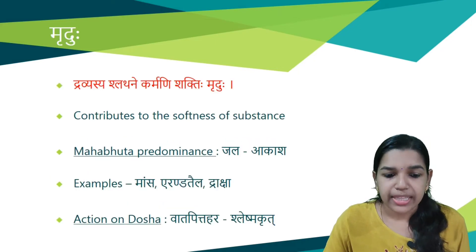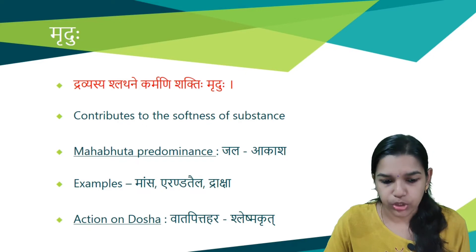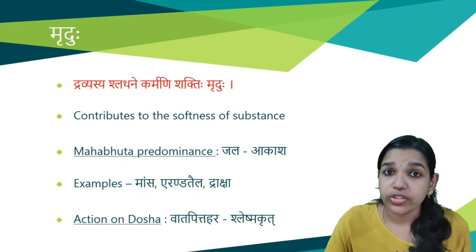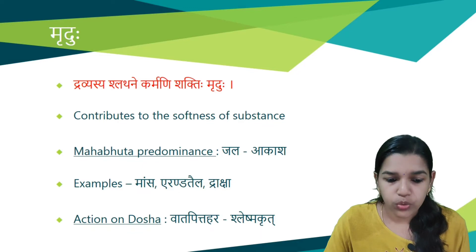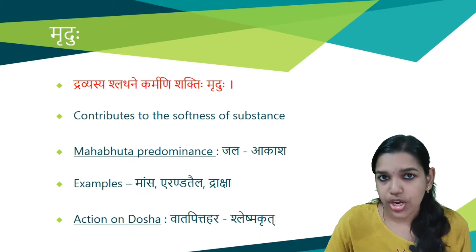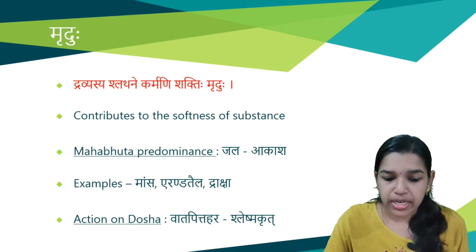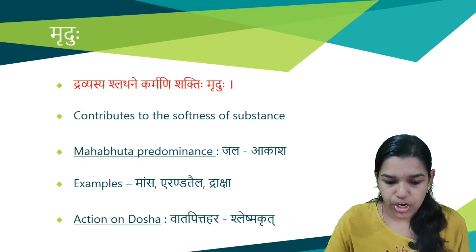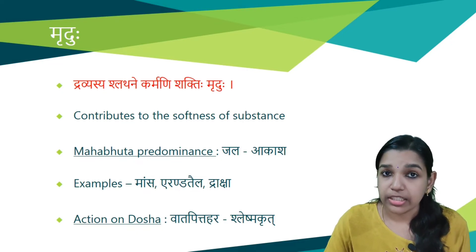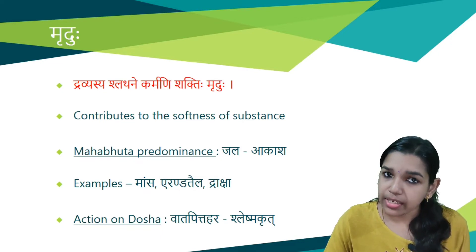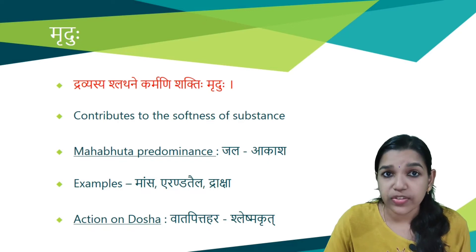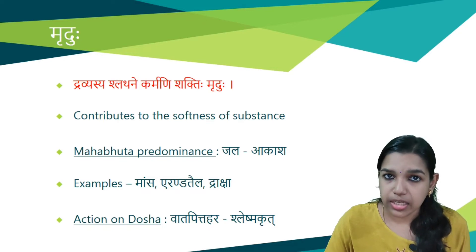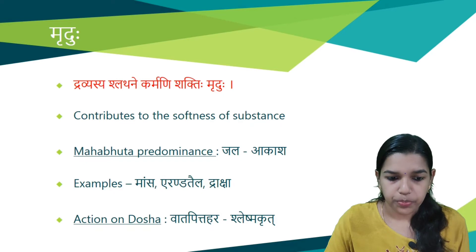Next is Mrudhu guna. Dravyasya shladhane karmani shakti hi mrudhu. That which contributes to the softness of a substance is called Mrudhu. Jala and Akasha are the predominant Mahabhudas. Examples are mamsa, erenda thaila, draksha, etc. Mrudhu is vata pitta hara, that is it reduces vata and pitta dosha, and Shleshma krit, that is it increases kapha dosha.